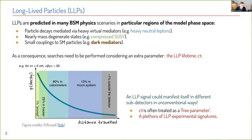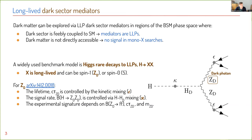Long-lived particles, or LLPs, are predicted in many BSM physics scenarios in particular regions of model phase space — for example, when there are particle decays mediated by heavy virtual mediators, nearly mass-degenerate states, or small couplings. LLP decay follows an exponential, meaning the signal can manifest in various subdetectors in unconventional ways. We treat the lifetime as a free parameter, leading to a plethora of potential experimental signatures. In this talk I focus on dark mediators, since dark matter can be explored with dark-sector LLP mediators in various regions of model phase space.